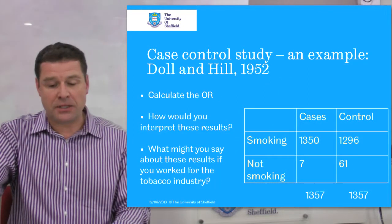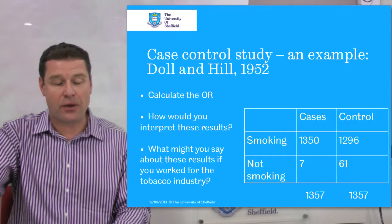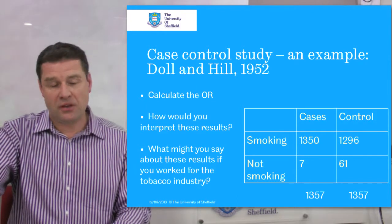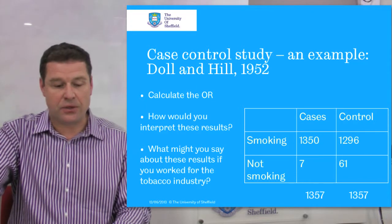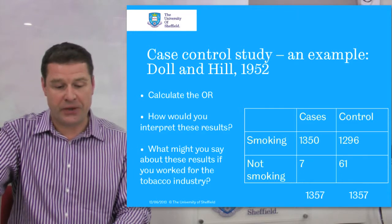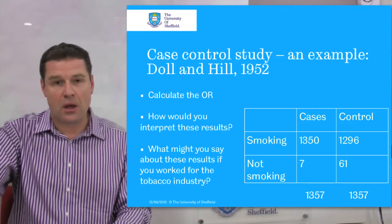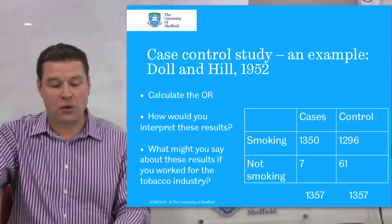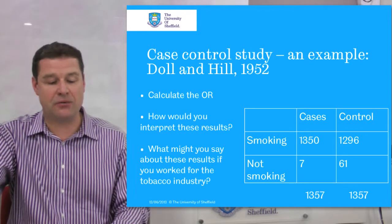What I'm going to ask you to do now as a task is calculate the odds ratio. After you've calculated the odds ratio, interpret the results. And lastly, if you work for the tobacco industry, what might you say about the results — in other words, how might you interpret them?